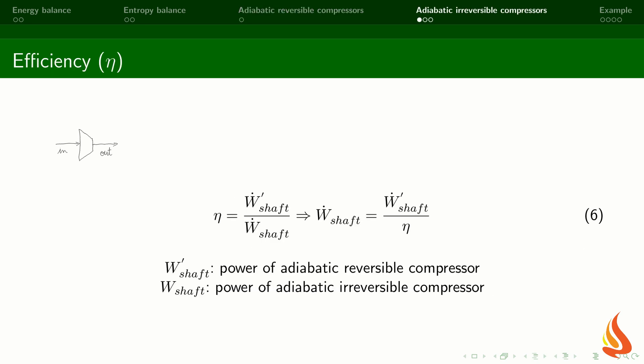For irreversible compressors, it is usual to refer to their efficiencies. The efficiency of a compressor is defined as the power of the adiabatic reversible compressor divided by the power of the adiabatic irreversible compressor. If we know the power of the reversible compressor and we know the efficiency, we can use equation 6 to estimate the power of the adiabatic irreversible compressor.